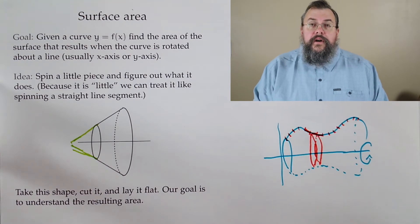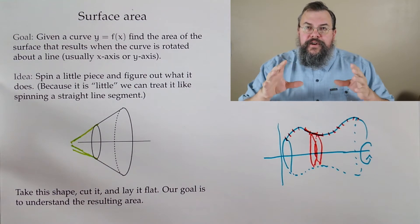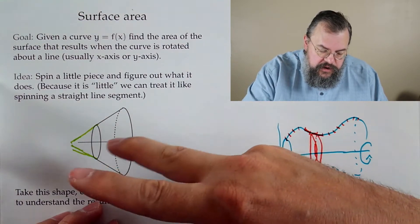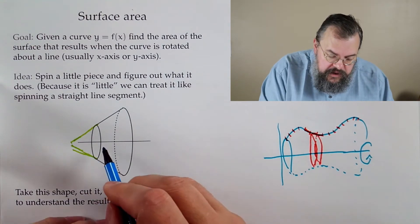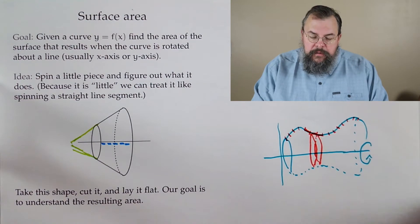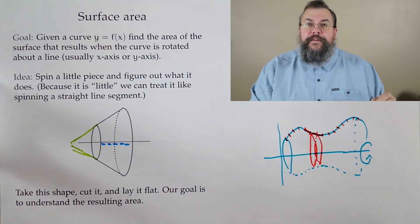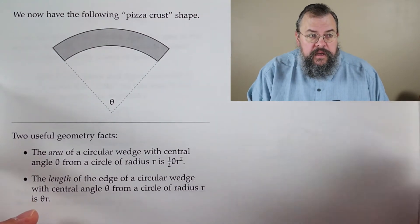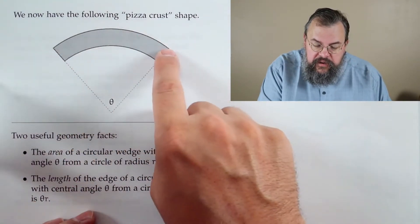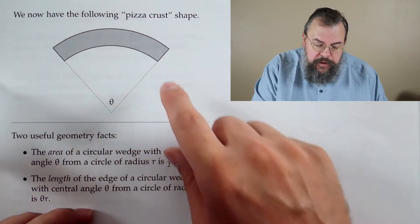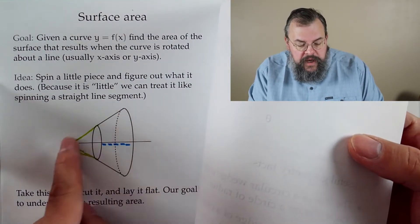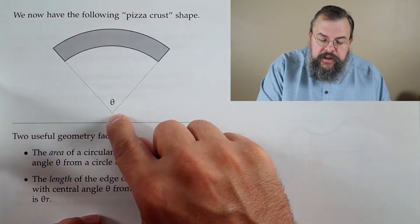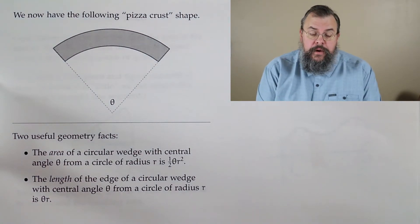We want to understand area, but it's a bit more complicated as a 3D shape. So let's lay it flat. We take our industrial-strength scissors, cut it, lay it flat in the plane, and try to understand that shape. What we get when we lay it flat looks like a pizza crust. The dotted part represents where we extended it as part of the cone, cut all the way down — that's the tip of the cone.